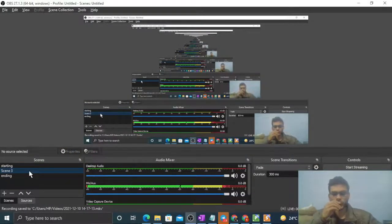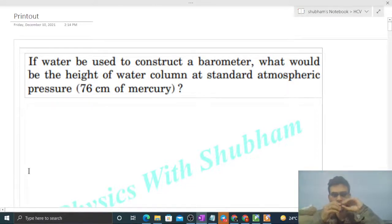Okay, hi everyone. So today let's discuss one interesting problem. It says that if water be used to construct a barometer, what would be the height of water column at a standard atmospheric pressure, that is 76 centimeter of mercury?